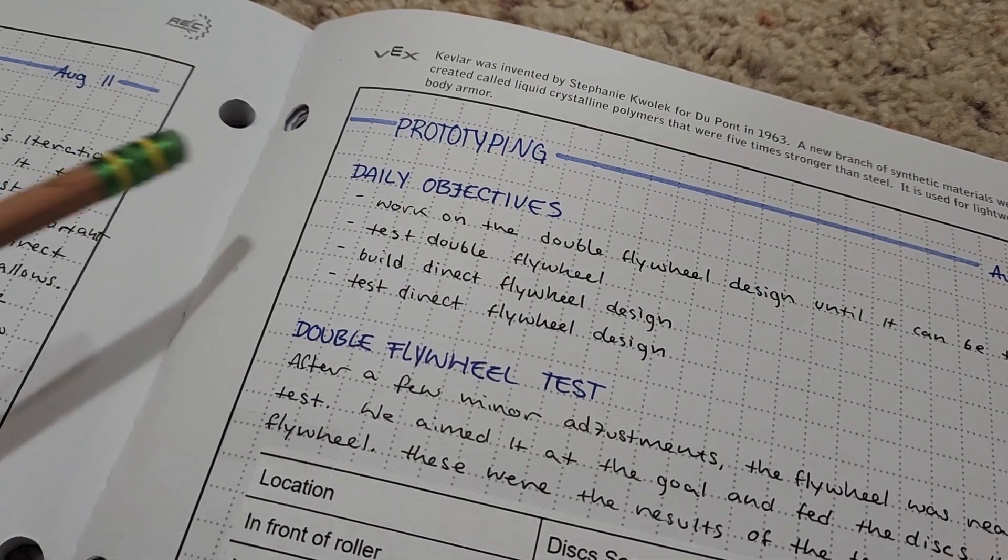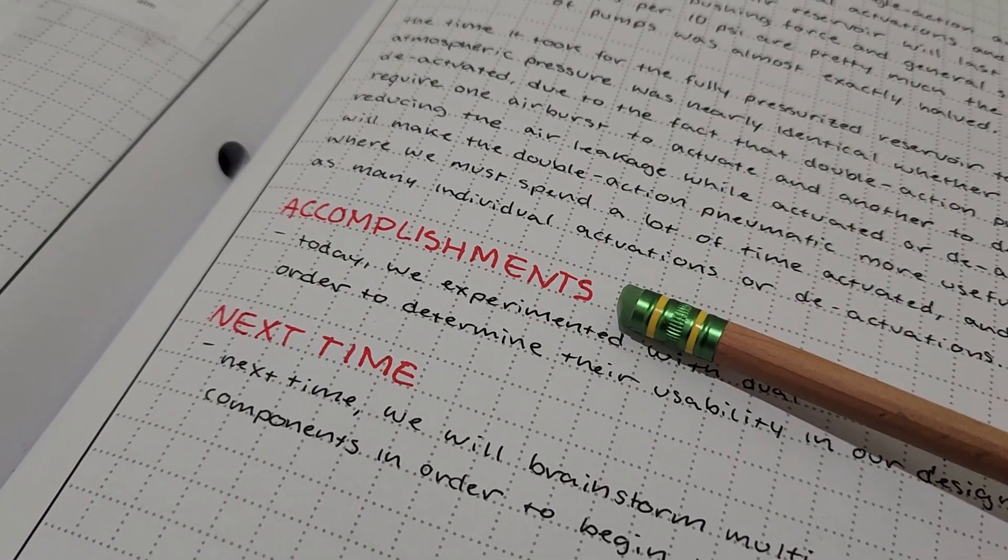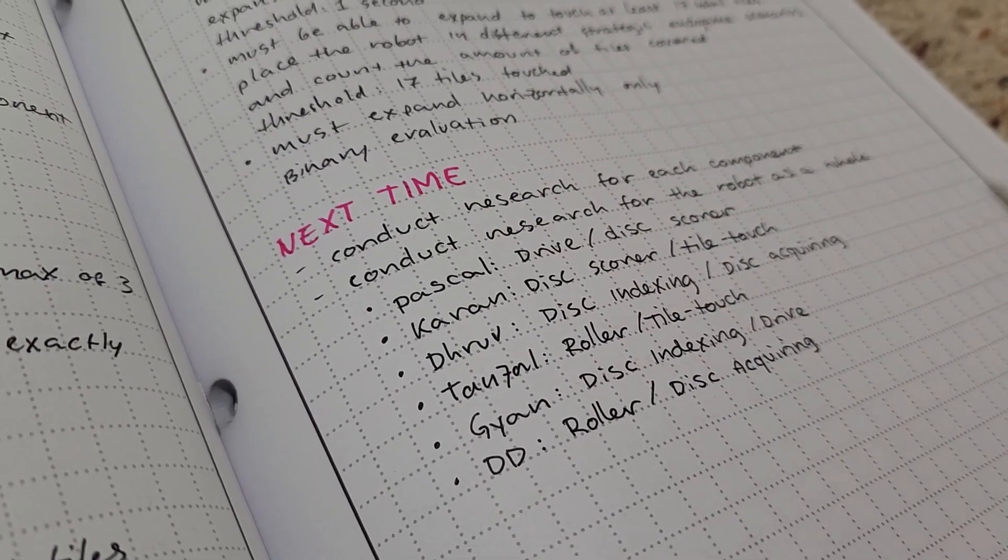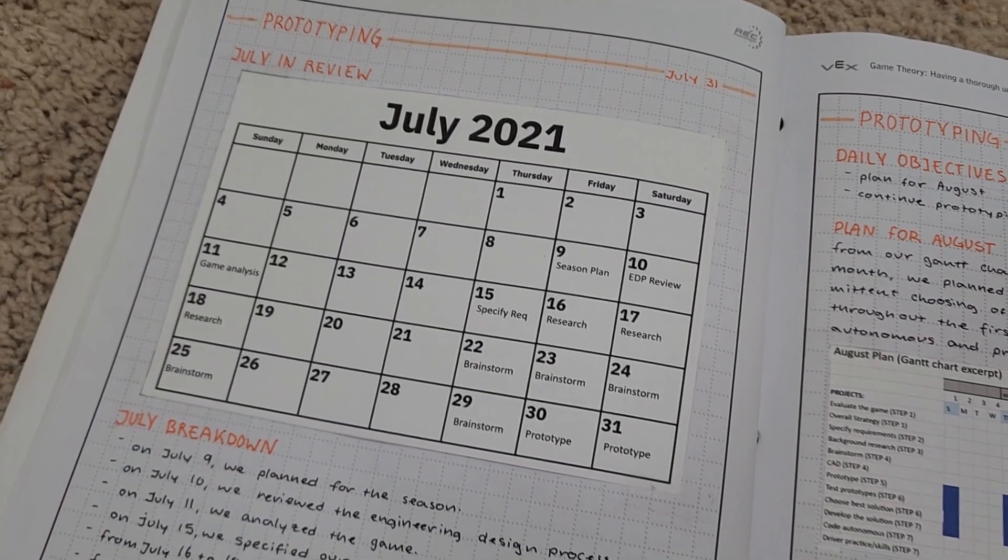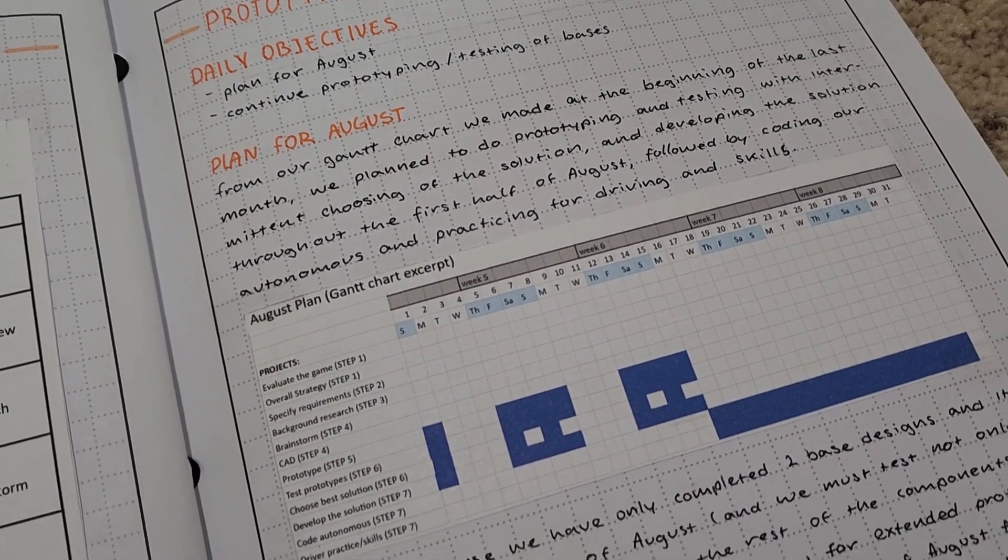And it's important to have sections titled daily objectives or goals, accomplishments, and next time at the beginning and end of every entry. Because that shows that you're thinking about your timeline and your plans, and that you're accomplishing what you need to accomplish. And always have a plan in mind, which is very important for the judging rubric.